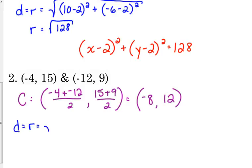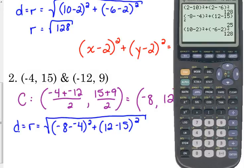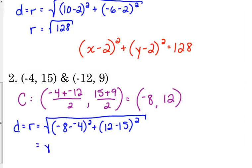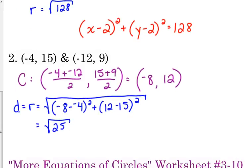Distance equals the radius, which equals the square root of negative 8 minus negative 4 squared plus 12 minus 15 squared. The order does not matter, guys. It doesn't matter whether you do the center minus the endpoint or the endpoint minus the center. You're going to get the same answer, and that answer is 25. Now, I do realize 25 is a perfect square. But I'm going to turn around and square it. So what's the point in taking the square root if I'm going to turn around and square it again? So let's just do x plus 8 squared plus y minus 12 squared is equal to 25.